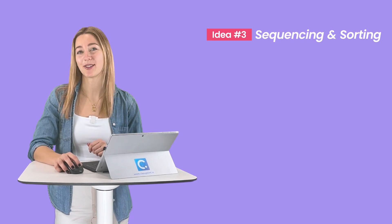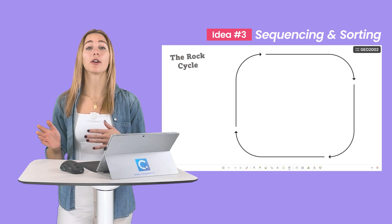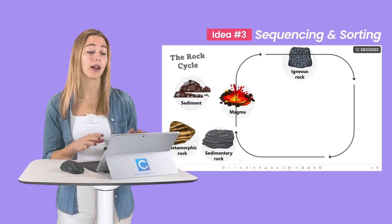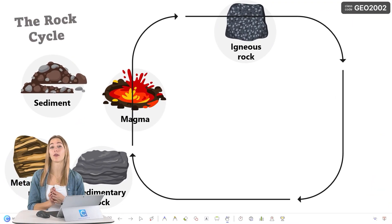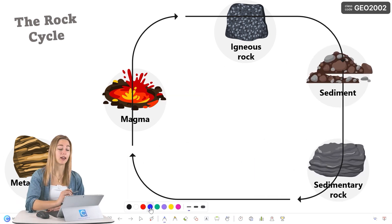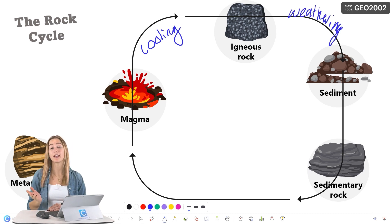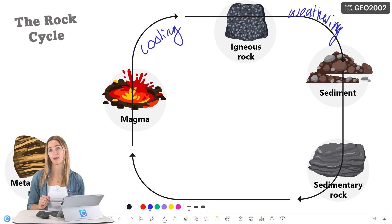Number three is sequencing and sorting. Have students sort through information and understand the order of events by adding elements of a timeline, steps, or storyline right into your PowerPoint slides. Here, I can demonstrate the order of events for a rock cycle and move around these objects to the correct location and annotate. This way, students aren't just staring at a static image and this information will make a more lasting impression.